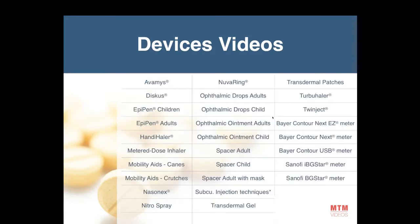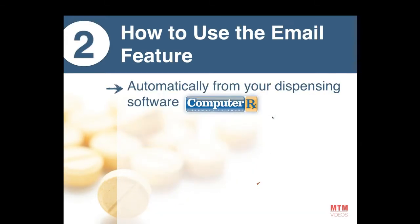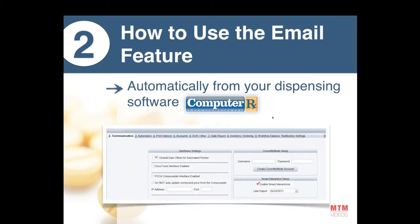We have a total of 39 device videos and more are coming, like the Contour glucose meter as well as the BG Star glucose meters, coming in the next few weeks. How do you use those videos? If you have the ComputerRx software, it's quite easy. Once you're registered, you only have to enable in your ComputerRx interface the Enable Smart Interaction Setup with the little red check mark shown here on screen.